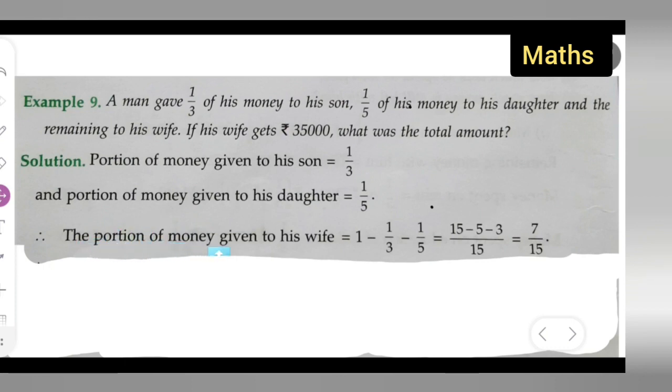Now, the portion of money given to his wife is the remaining. If his wife gets ₹35,000, the remaining money will be for wife. So what you have to do is 1 minus 1/3 minus 1/5. You can do the LCM. The LCM of 3 and 5 is 15. Let me explain this step.